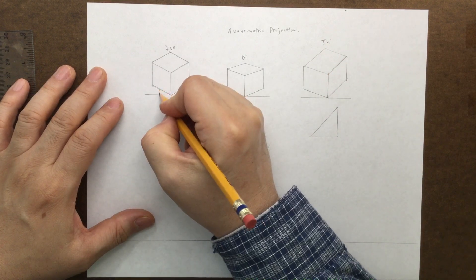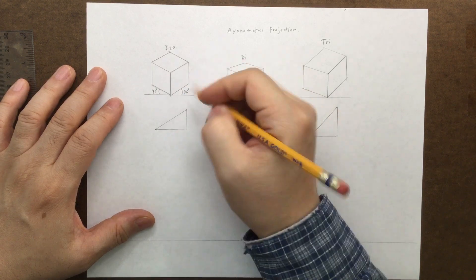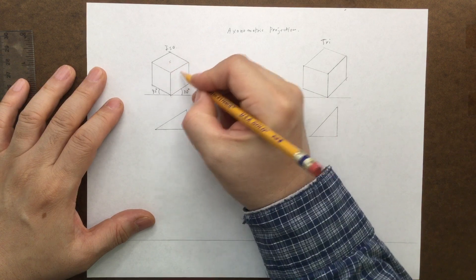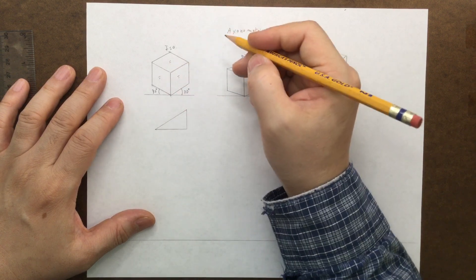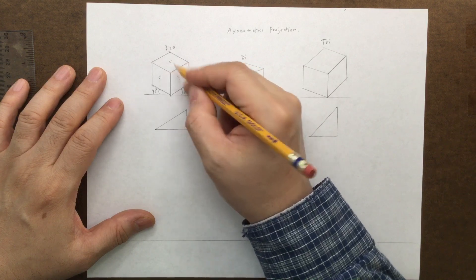We already know that this should be 30 degrees. The reason for this popular usage is you can equally see these three sides. So if I turn this around, these never change. These are all the same size.